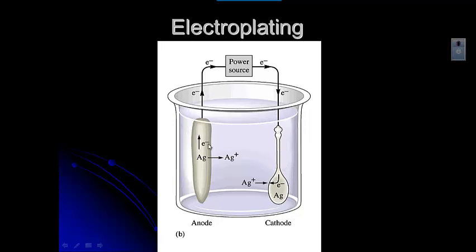And what happens is the electrons are pulled from the silver and that forms silver ions. You'll remember that silver ions are soluble in water, so they go into this electroplating solution. And then as the electrons move around to the item that's being electroplated...